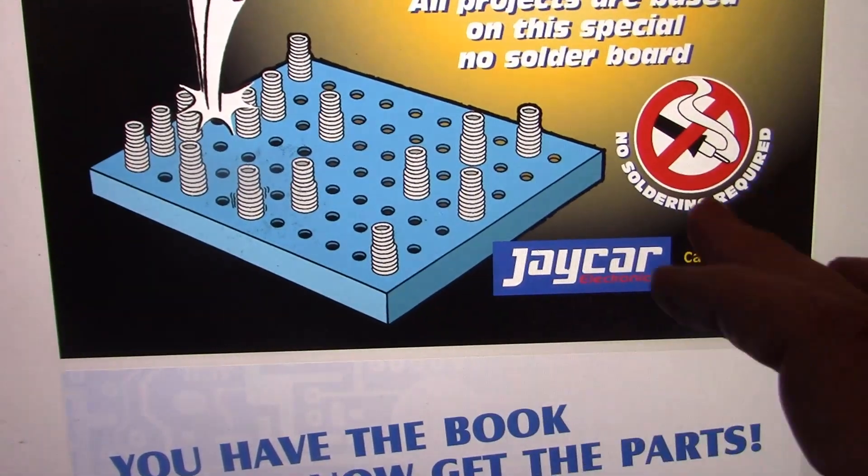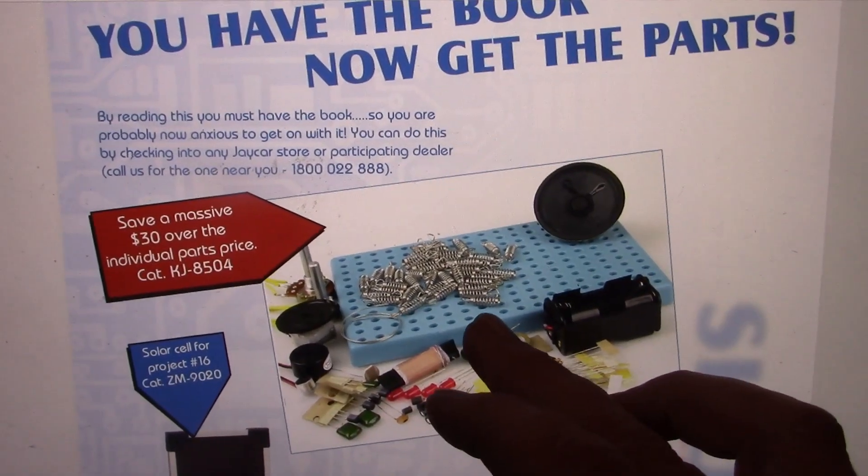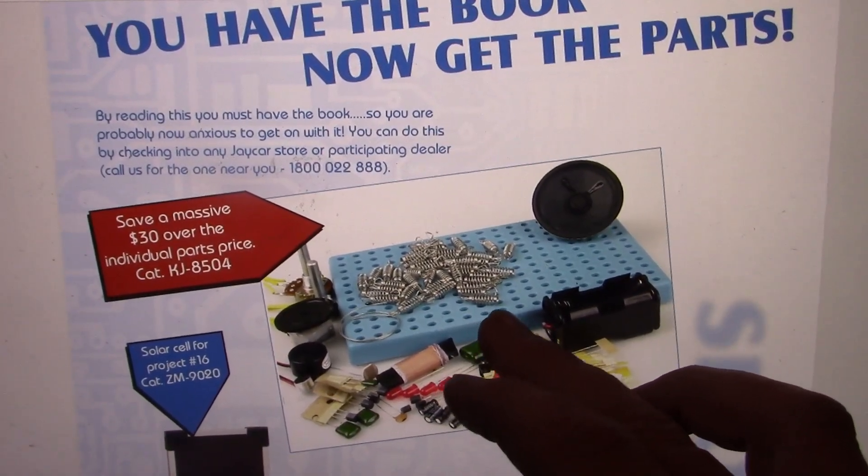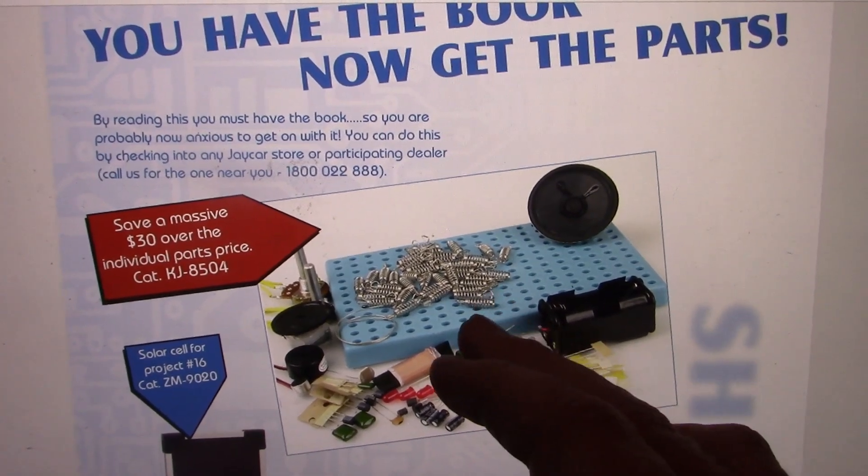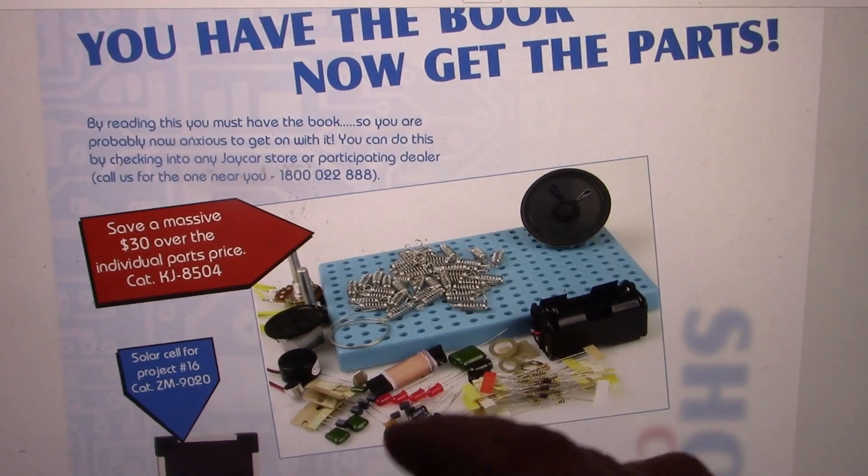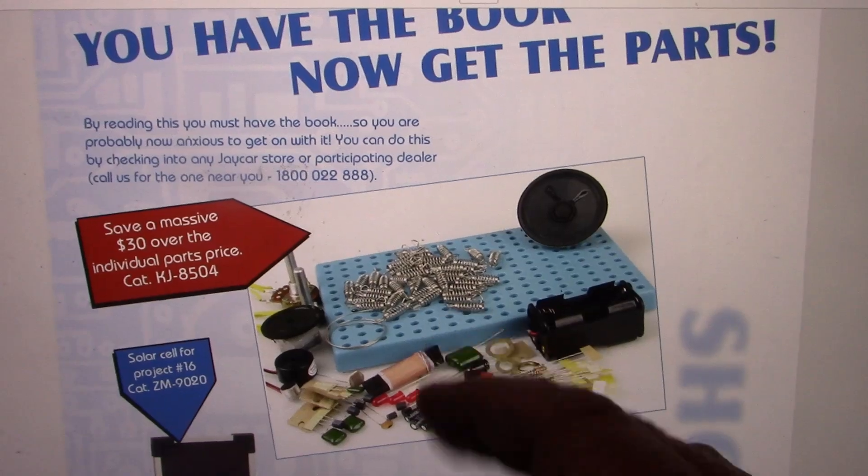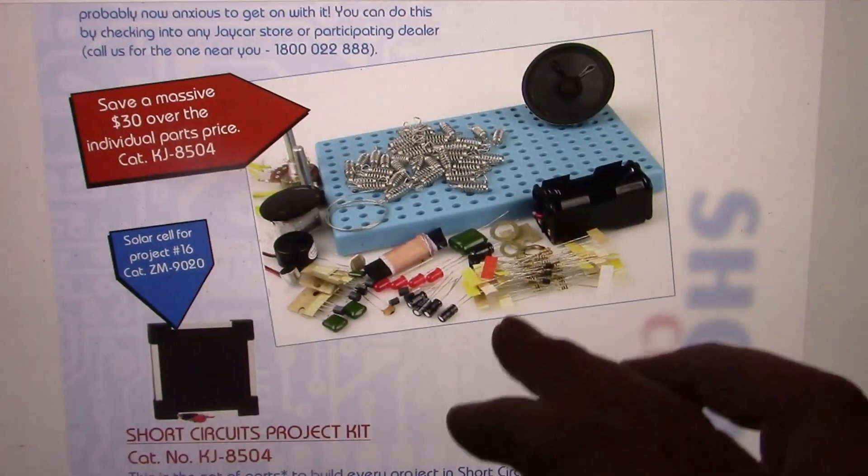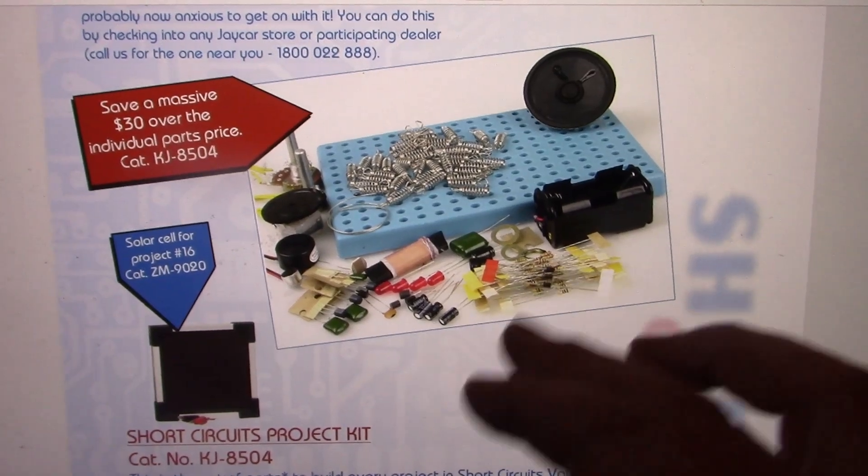There's the board, no soldering required. And there are springs, slightly different springs to the type that Dick Smith used. Dick Smith normally used screws and washers, they might have used springs in later versions. But anyway, there's the springs that you put the component leads in. You can probably recognize a few of the components there.